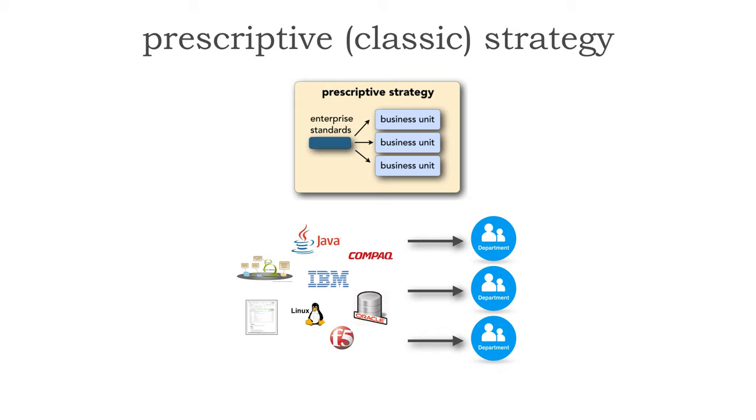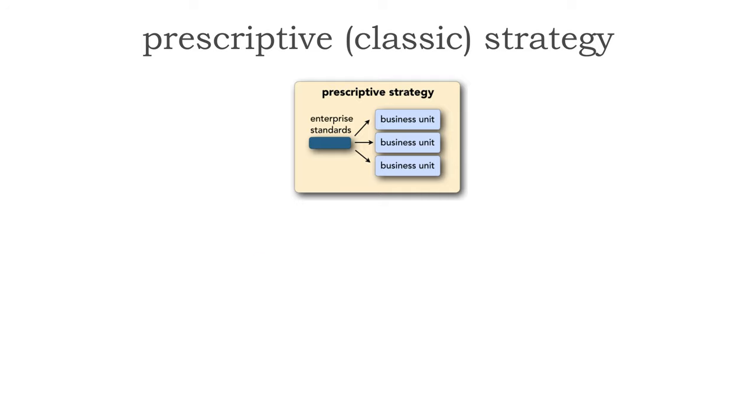But before we jump into any conclusions, a good architect always thinks about all of the trade-offs, the pros and cons of any type of solution. Let's take a look at both the good and bad about the prescriptive or classic strategy. Although this looks really bad, there are some good aspects to it.